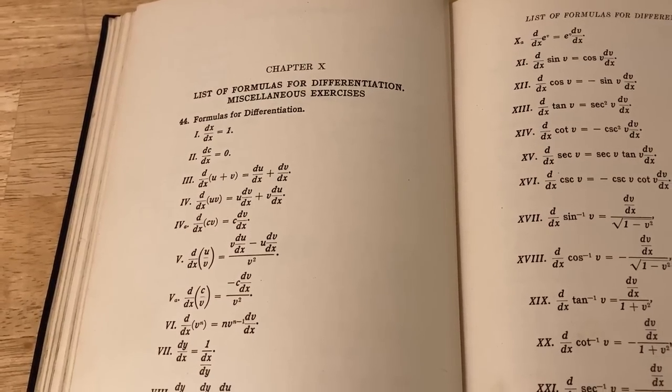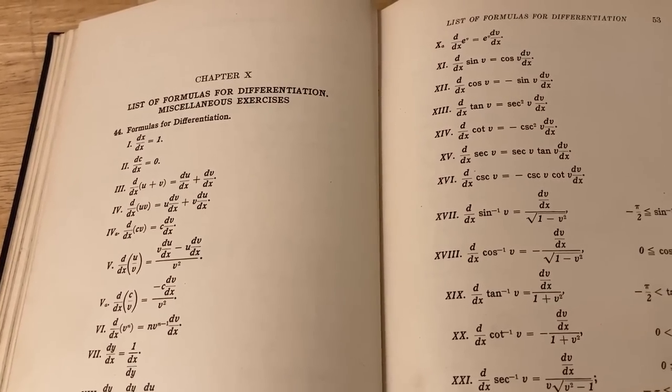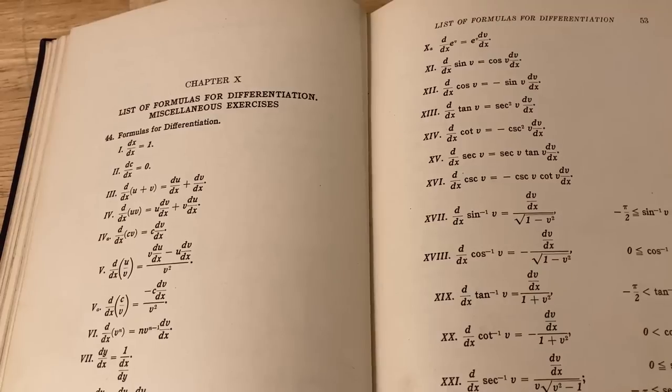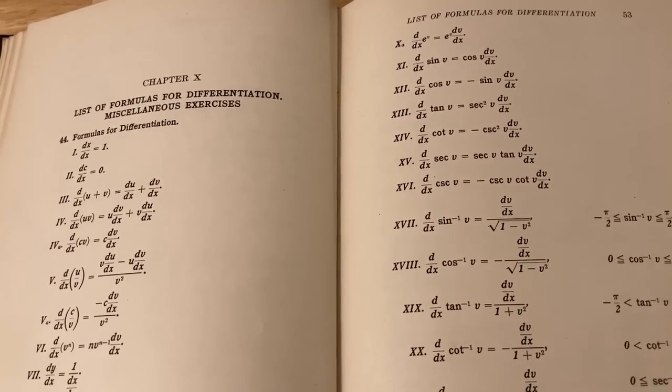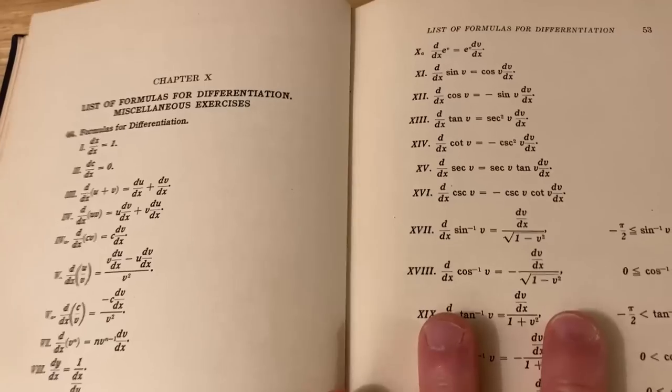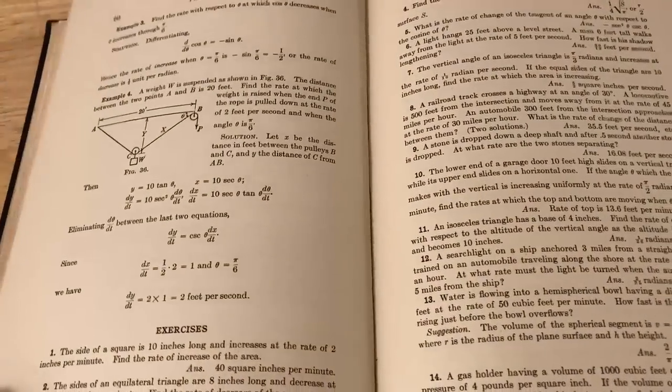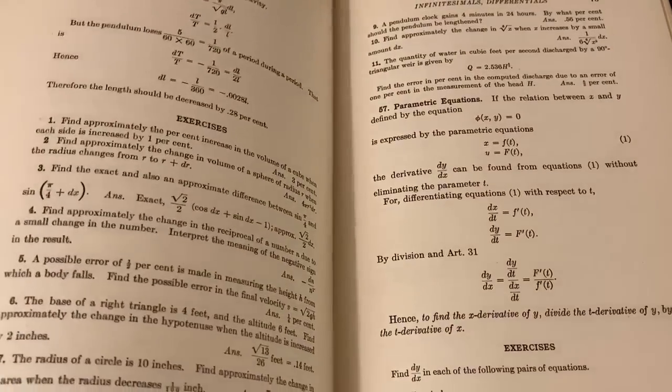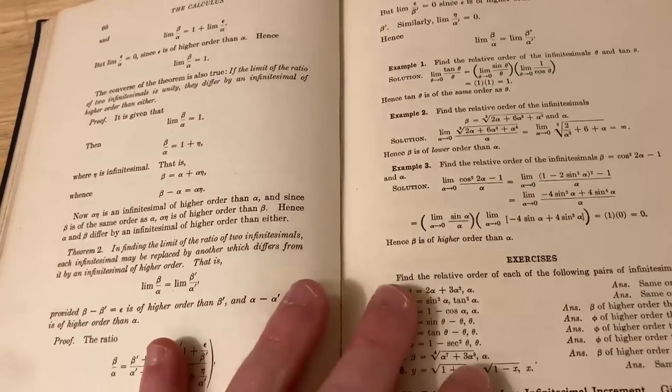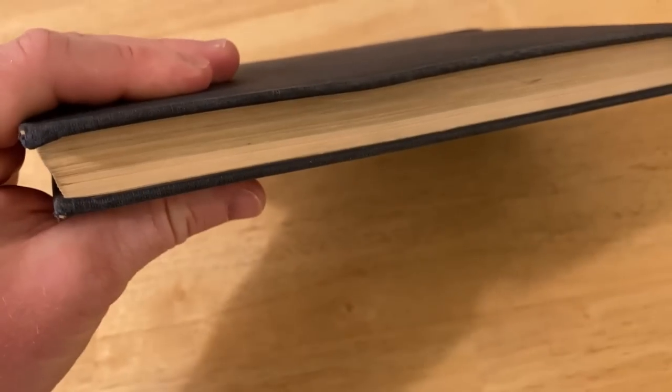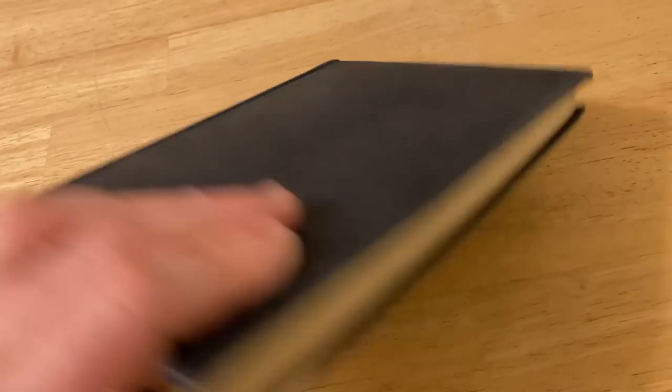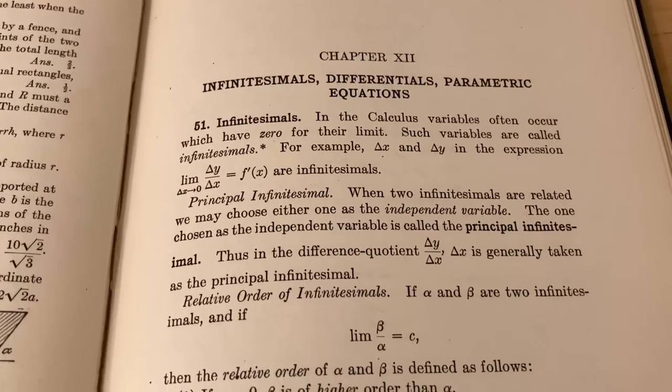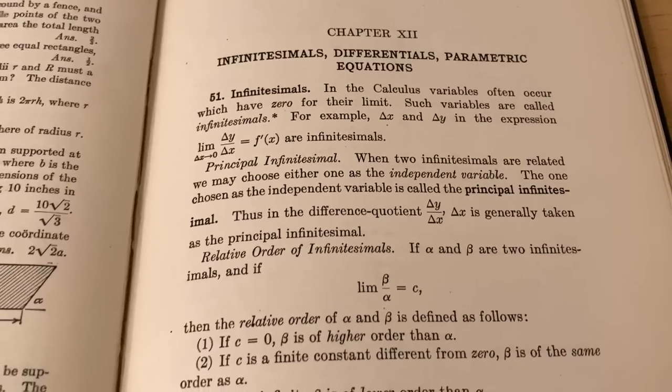Here you can see chapter 10 has the formulas for differentiation. So this book is basically an old version of what students use today in college. For example, it's like an old version of Stewart's book or Larson's book, but you can see it's much smaller. It's easier to carry around. And it has a lot less illustrations. And it does have less topics, perhaps, than what you would see in those modern books. It is a much smaller book.